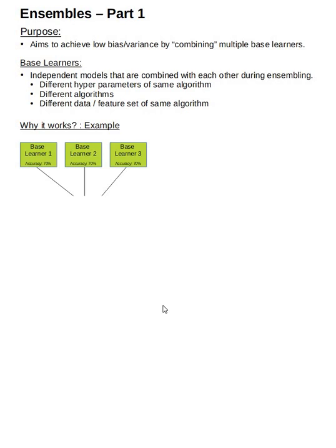So now let's look at why ensembles work. We'll take an example, and once we have the intuition in place, we'll generalize the mathematics. Let's say you have three base learners. Base learner one, which has an accuracy of 70%. Base learner two, which also has accuracy 70%. Base learner three, which again has an accuracy of 70%. What that means is 70% of the time each of these learners are correct.